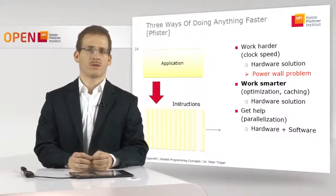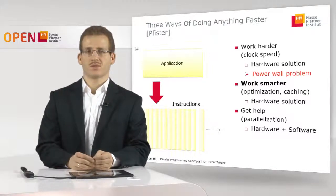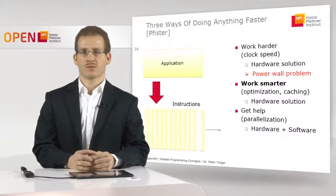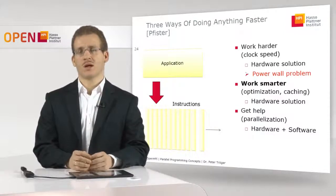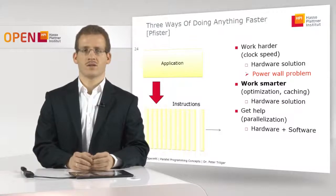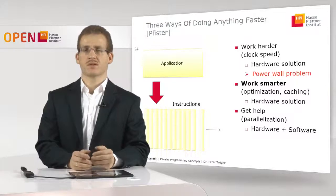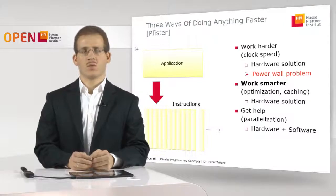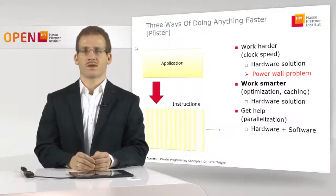The third way would be to get help, to deal with parallelization. We already discussed in Unit 2 that there is a problem with working harder — with increasing the processing speed in modern processor hardware due to effects with cooling and power supply. So increasing the frequency of modern processors is no longer possible due to the power wall problem. The question is now: what about smarter solutions inside the processor hardware that could transparently make our software run faster?